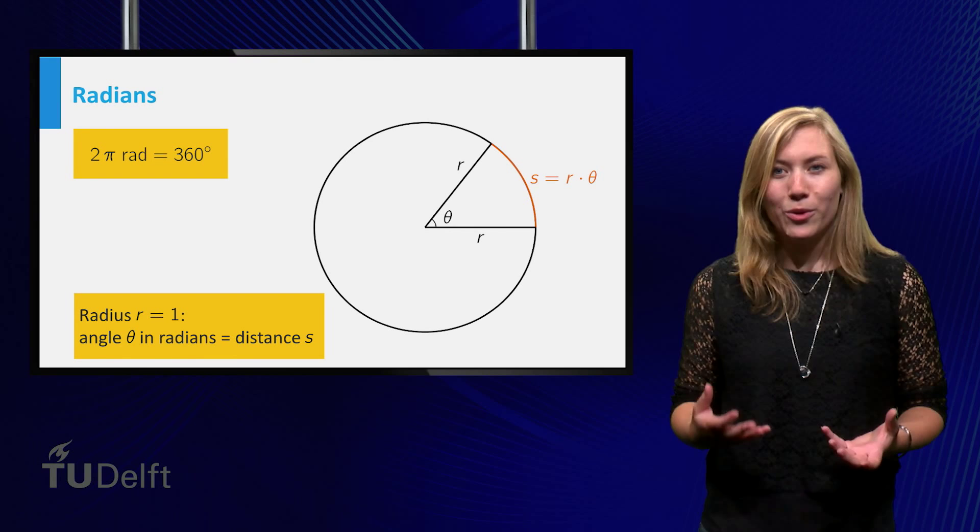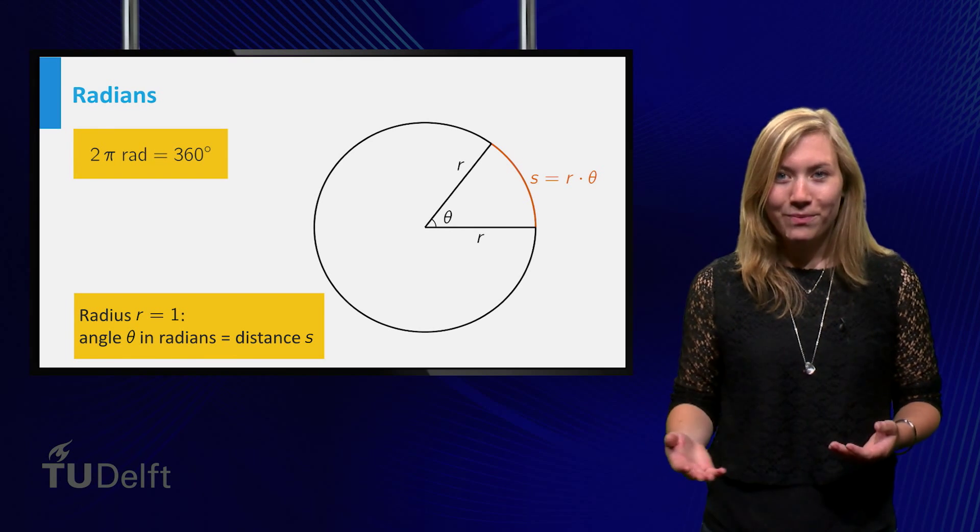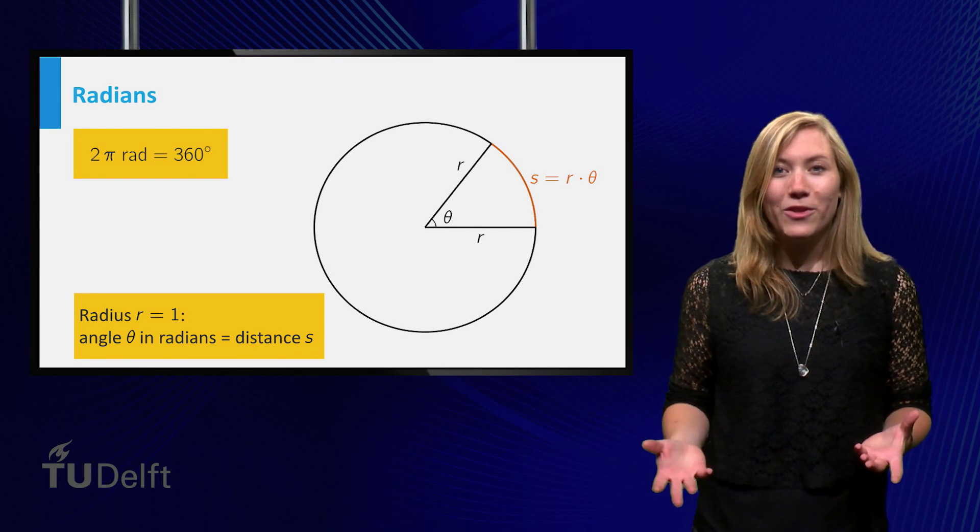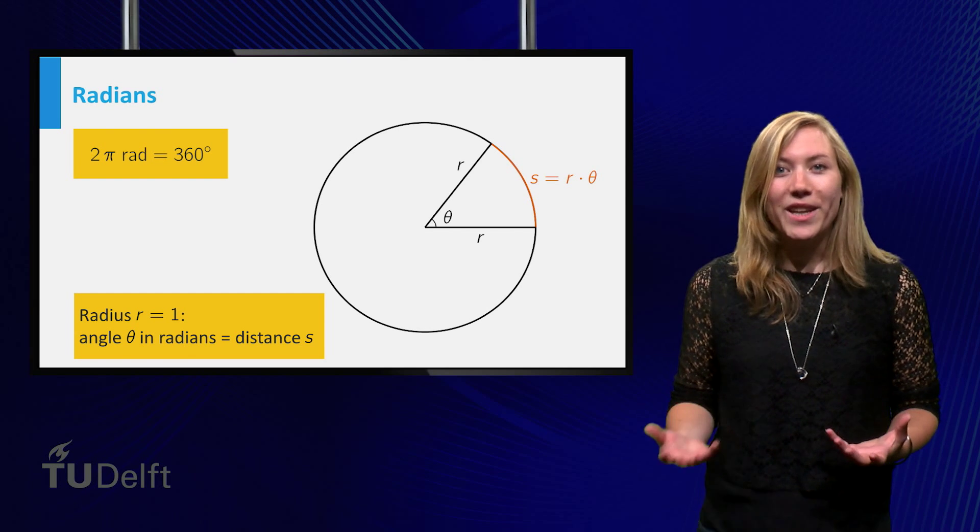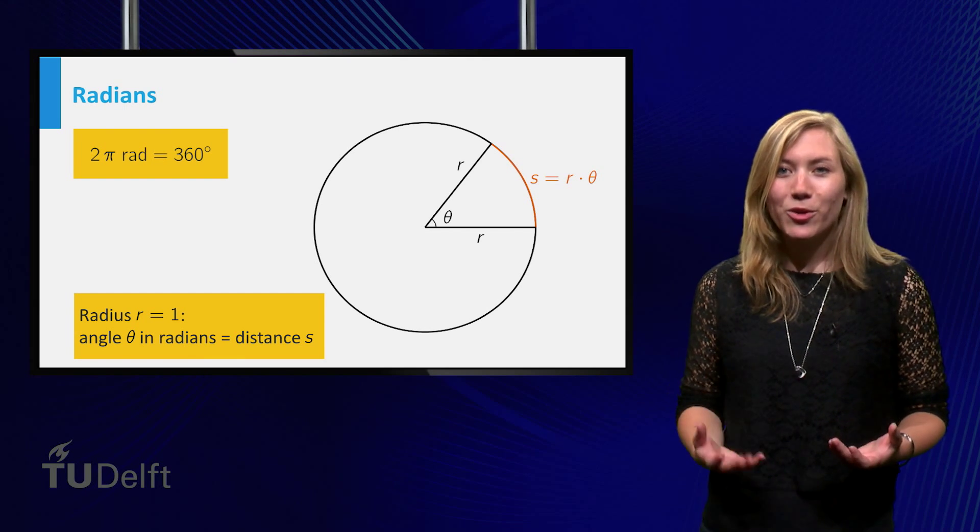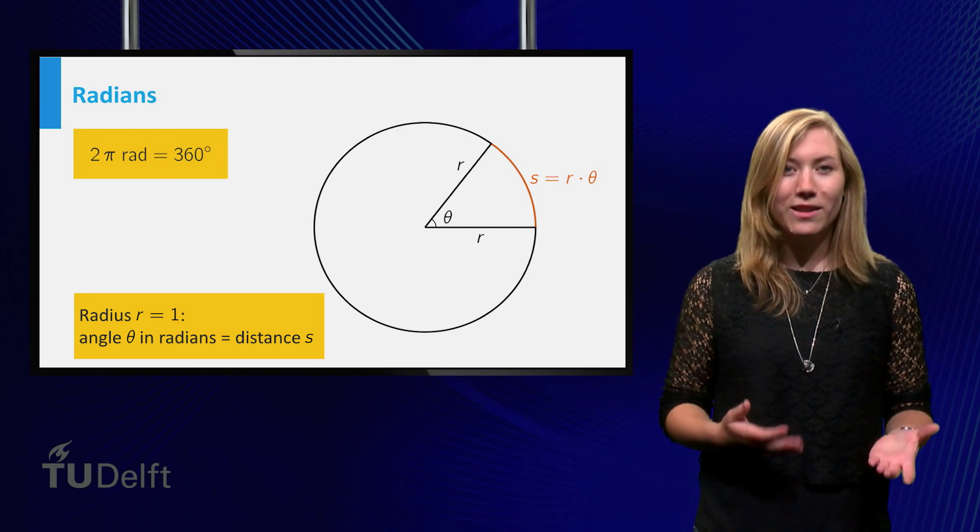Thus, a full circle is 2π radians, because that is the circumference of the unit circle. To convert degrees to radians, you can multiply by a factor of 2π divided by 360.